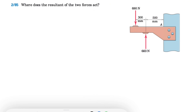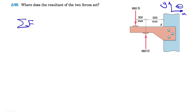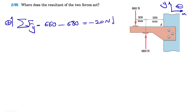In this one, we need to figure out where does the resultant of these two forces act. So we're finding the resultant — we have to find the sum of all forces in both X and Y direction. But if we look at this, we'll see that if we call our X and Y in this direction, all of the forces are in the Y direction. So the sum of all forces in the Y direction gives us 660 minus 680, which will be minus 20 Newtons downward.